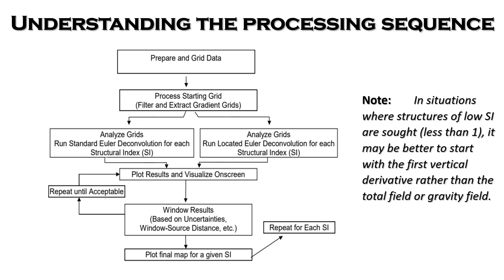How do we understand the processing sequence of Euler deconvolution? You start by preparing and gridding the data. You then filter and extract gradient grids — that is the dz, the derivative along the horizontal x-axis, the y-axis, and the derivative on the vertical axis. After this, the grid is analyzed and then we run the standard Euler deconvolution for each structural index.